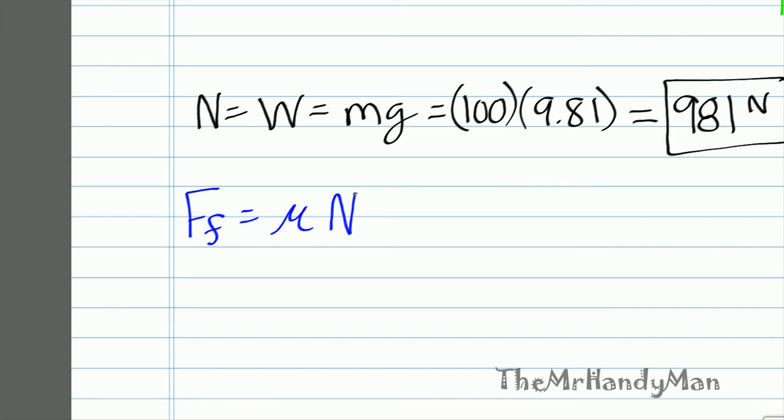friction force equals friction factor times normal, which is equal to 981 force times 0.5 friction factor, which equals 490 and a half newtons. That's also an important number.